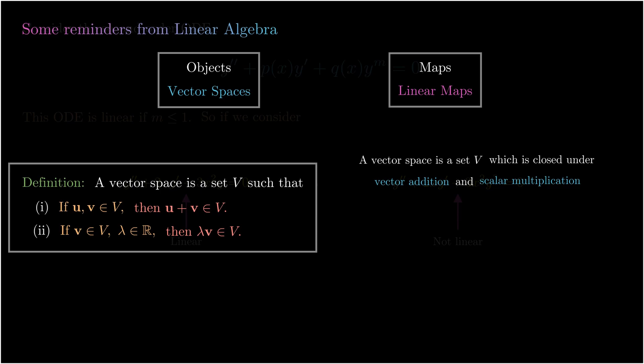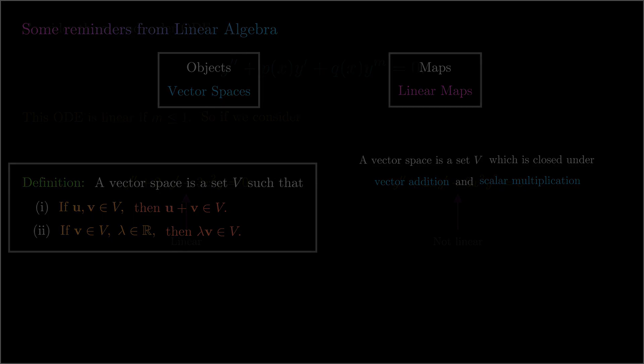If you want to understand what linear maps are, you can go back to some of my earlier videos where I have a discussion of linear maps. In particular, I give a discussion of why the definition of a linear map is obvious given the definition of a vector space. If you have a hard time remembering the definition of linear maps, I would 100% recommend checking out those videos — they'll be linked in the cards and the description box below.